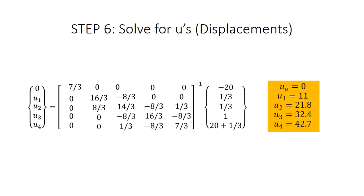The final step is to solve for our displacements U. We rearrange the equation by inverting the global stiffness matrix K and multiplying by the sum of the F matrix and Q matrix, with -20 and +20 applied accordingly. Solving gives: u0 = 0, u1 = 11, u2 = 21.8, u3 = 32.4, and u4 = 42.7. This tells us how much each node displaces when we apply the initial and boundary conditions. That is how you perform finite element analysis for two quadratic elements in two dimensions.